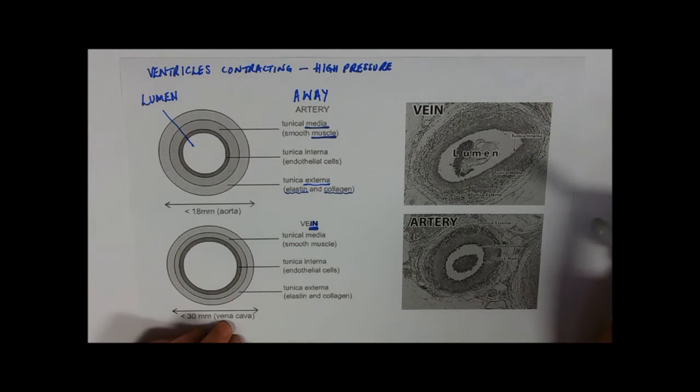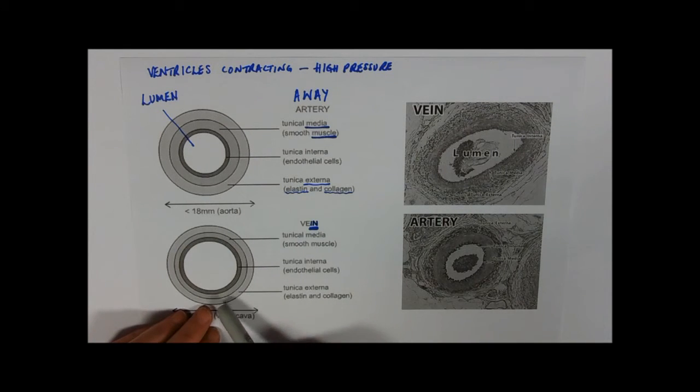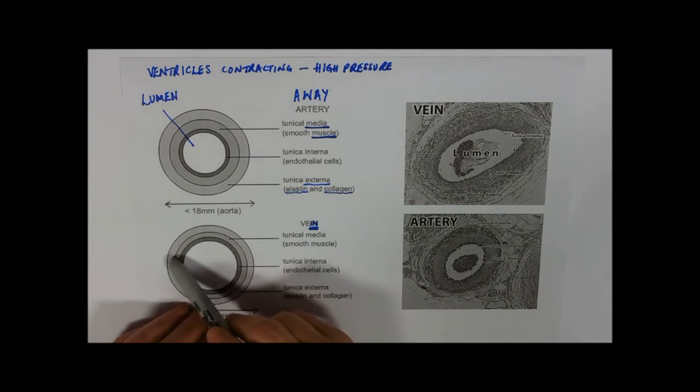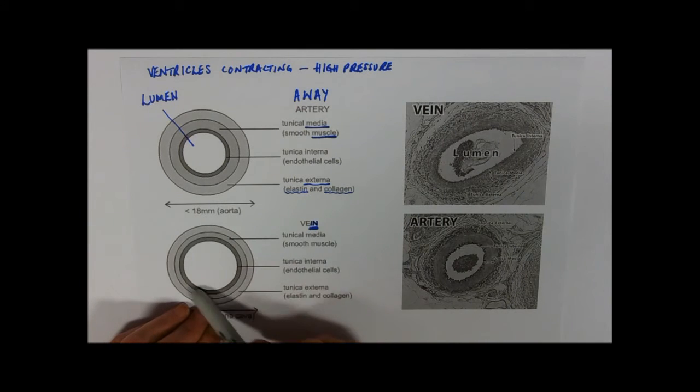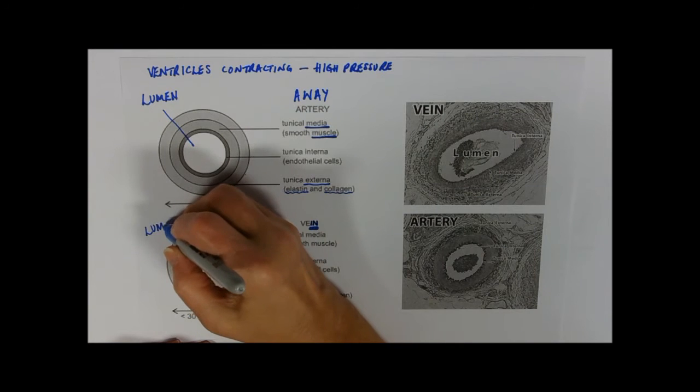So veins are transporting blood back towards the heart but under very low pressure. Because it's under low pressure, it doesn't need a big thick tunica externa. It doesn't need a big thick tunica media because there's not much muscle action going on there, but it still needs its nice smooth lining of endothelial cells.